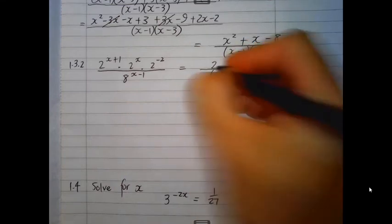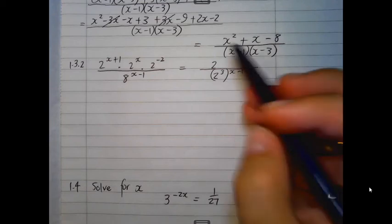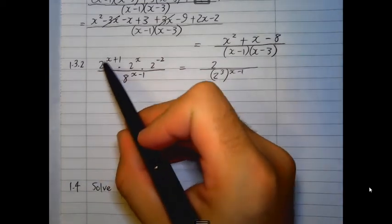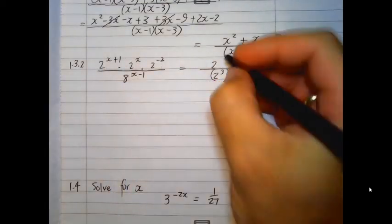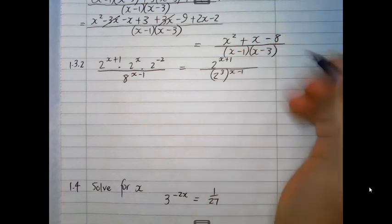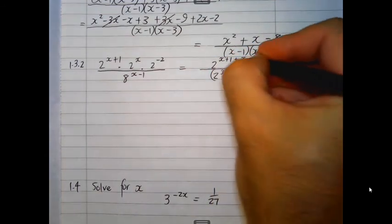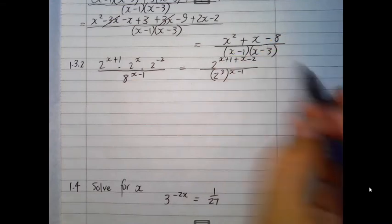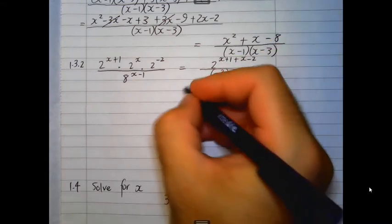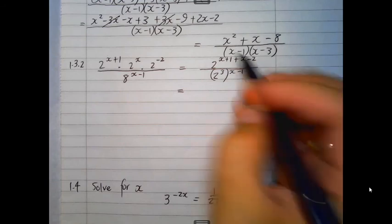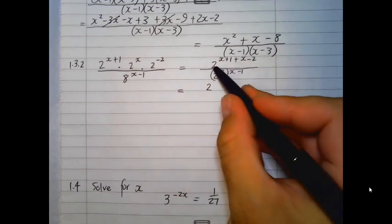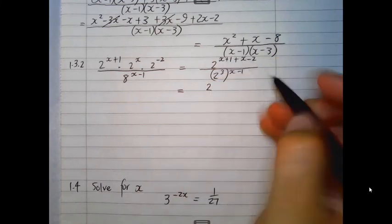So, you can join them into one piece at the top, and you're going to say, 2 to the power. Now, let's add the exponents. So, x plus 1 plus x plus negative 2. So, the negative will win that one. And there is my numerator in one item. So, it's simplifying the top. 2 to the power x, and there's another x, will be 2x. 1 and minus 2 will be minus 1. Now, at the denominator, this 3 needs to be multiplied out. So, you are going to get 2 to the power 3x minus 3.